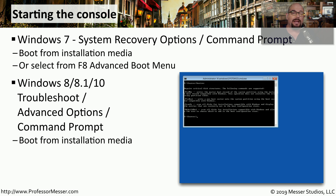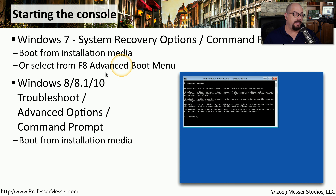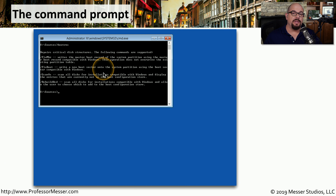In Windows 8, 8.1, or Windows 10, you would boot from installation media and choose Troubleshoot, Advanced Options, and Command Prompt. From the command prompt, you can then perform any of the maintenance functions that might help remove the malware or assist your system in booting up properly.